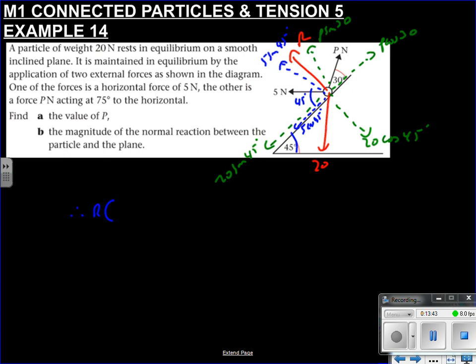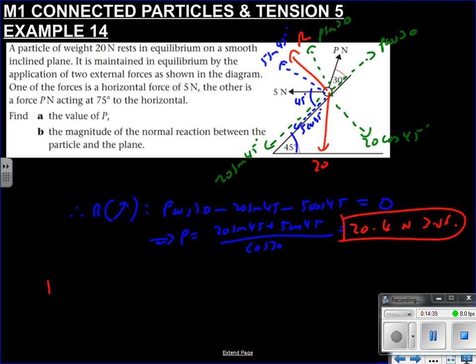Therefore, if we resolve up the slope, so we've got P cos 30 going up. Again, it is literally always the same. It's just getting over drawing those forces accurately. So this all equals zero. And therefore we can find what P is if we rearrange. So 20 sin 45 plus 5 cos 45, all over cos 30. So that will equal, calculators out, so 20 sin 45 plus 5 cos 45 divide by cos 30. So that's 20.4 newtons to 3SF, but I'll keep the full value in my calculator because I'm probably going to need it.